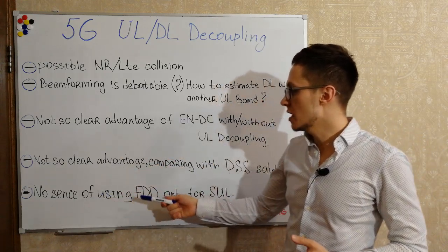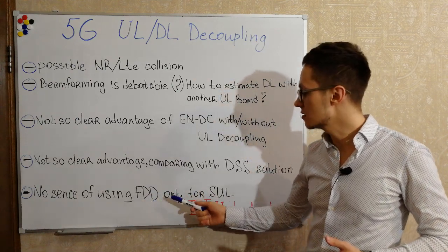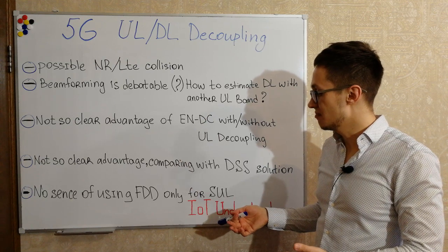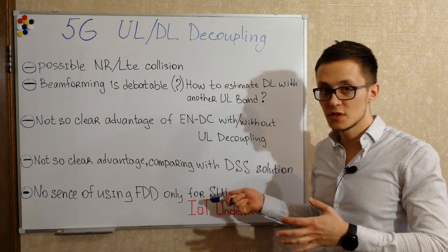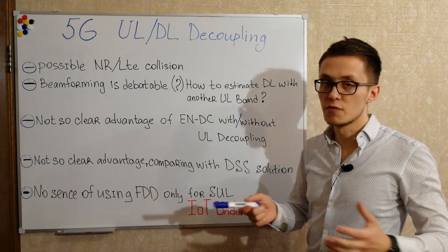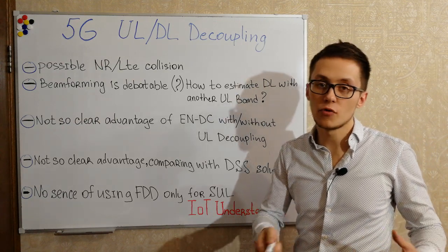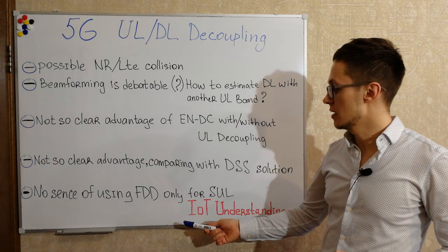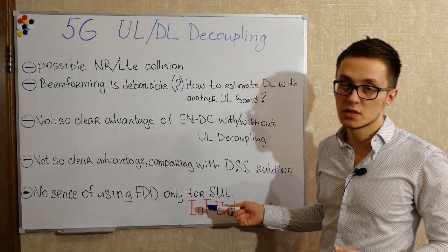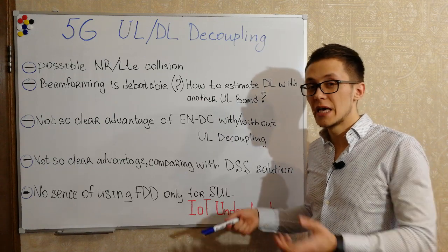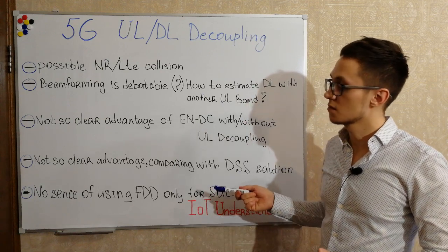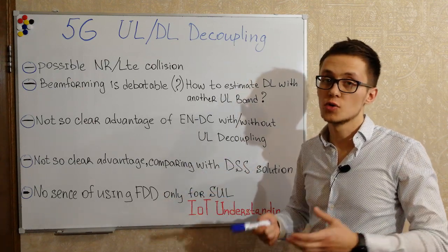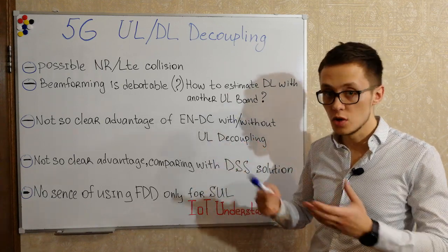The last disadvantage is that there is no sense in using a full FDD band only for supplementary uplink decoupling. In most regions, sub-2 GHz bands are FDD bands, so using only the uplink portion does not make full use of the spectrum. One should consider whether carrier aggregation would be a better alternative. That said, you should very carefully investigate your network and conduct test field trials before deciding whether to deploy uplink decoupling or not.